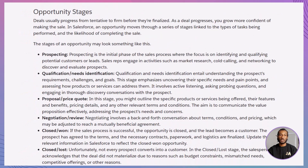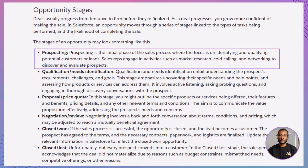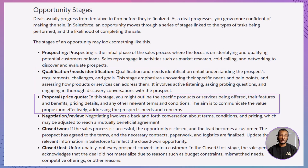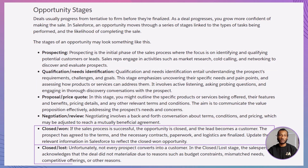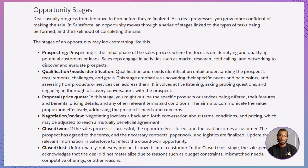Now, let's talk about opportunity stages. These stages mirror the journey of a deal, starting from prospecting, moving through qualification, proposal, negotiation, and finally closing — either won or lost. Each stage gives you a clearer idea of where you are in the sales process and what steps need to come next. For example, when you're in the prospecting stage, you're just getting to know the customer. But as you move into negotiation, you're fine-tuning the details before sealing the deal.